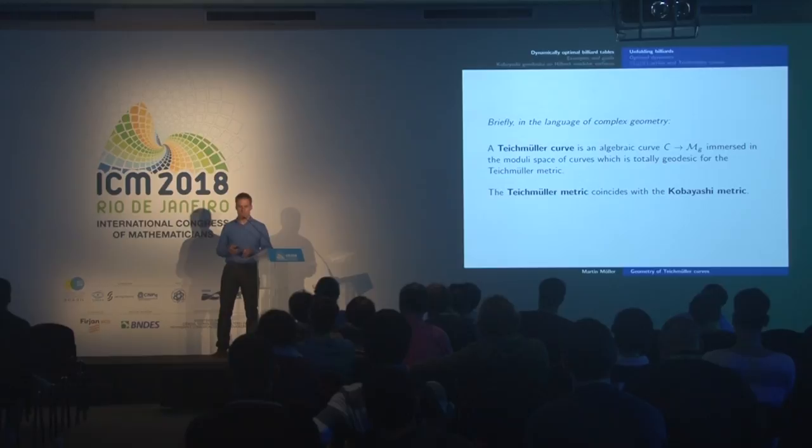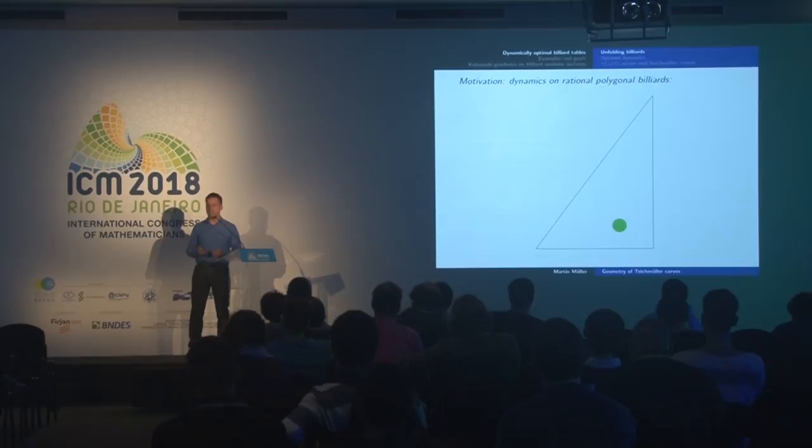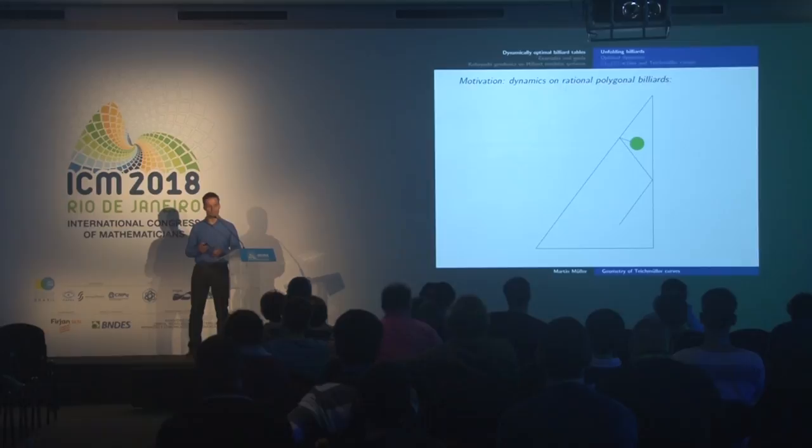So let me start over, leave the world of complex geometry and go to dynamics — specifically, dynamics of rational polygonal billiards: a single ball that bounces around in a billiard table, gets reflected in the walls, with no friction. We are interested in the long-term behavior of trajectories of such a ball.